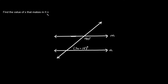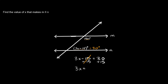Here's the next problem. Find the value of x that makes m parallel to n. These two angles are both interior angles, both on the same side of the transversal, so these are consecutive interior angles — and consecutive interior angles add up to 180 degrees. So if this is 150 degrees, then this angle has to be 30 degrees. So the equation is 3x minus 15 equals 30. Adding 15 to both sides gives us 3x equals 45. Dividing both sides by 3 gives us x equals 15.